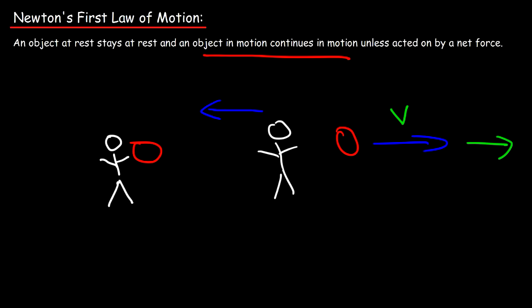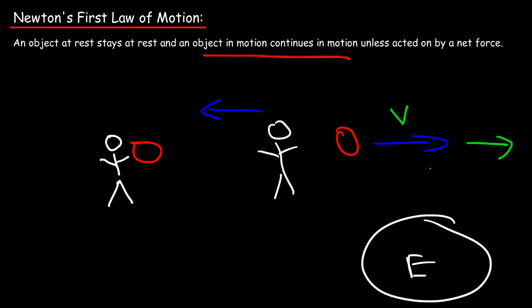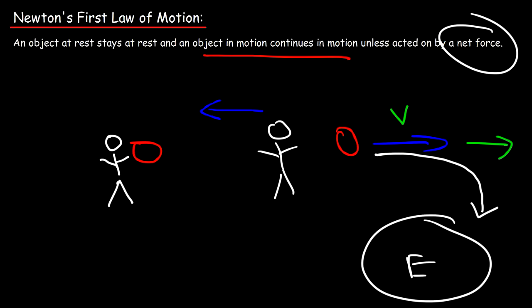Eventually, if the ball comes near a planet — say, Earth — gravity will turn the object toward Earth. A net force can change the motion of an object, but if there is no net force, the ball will continue to travel straight.